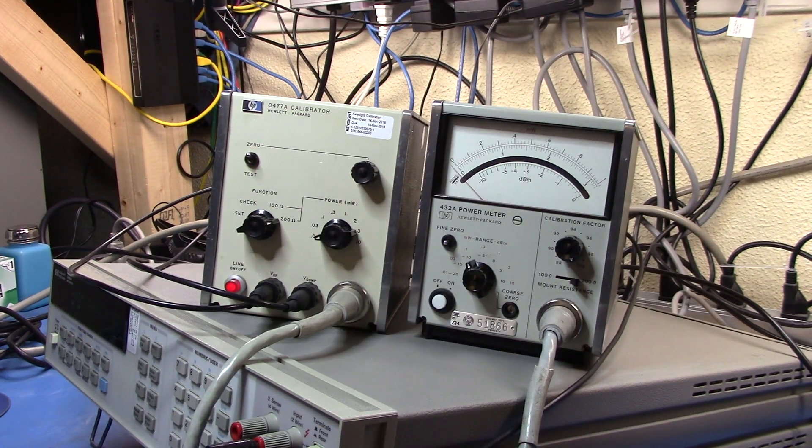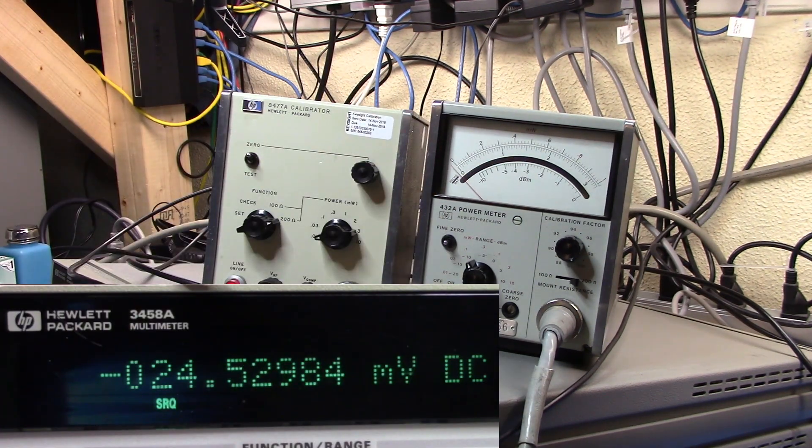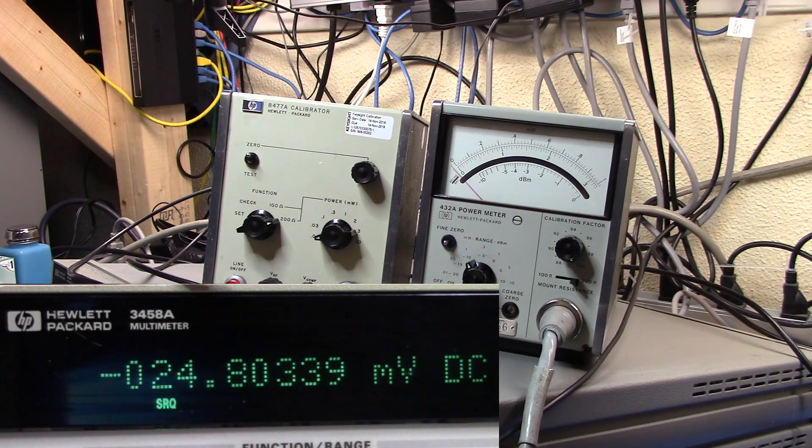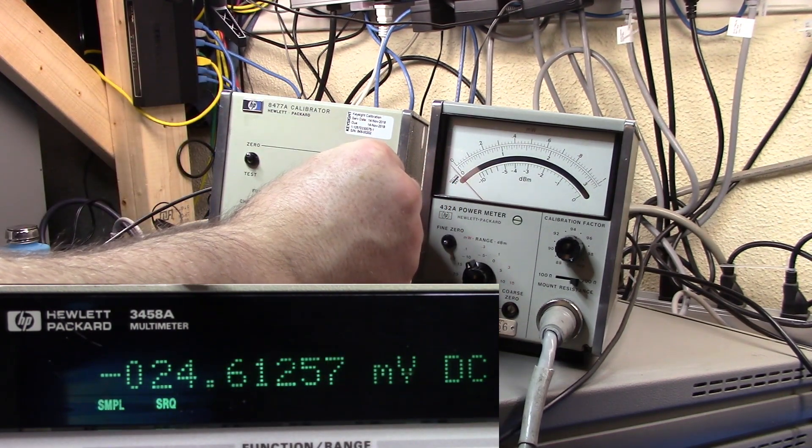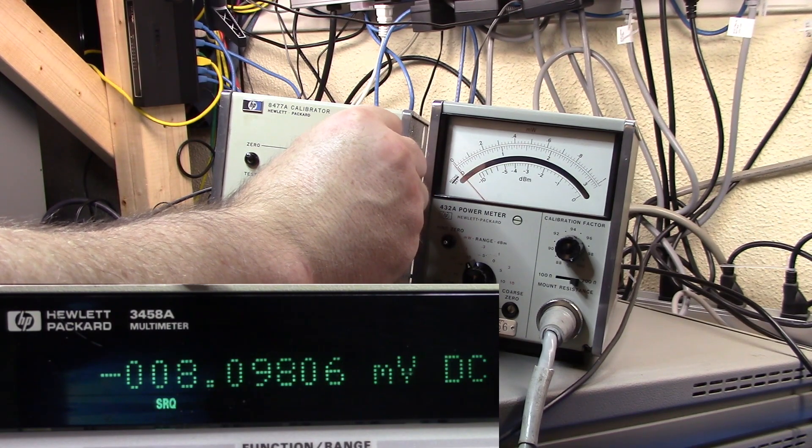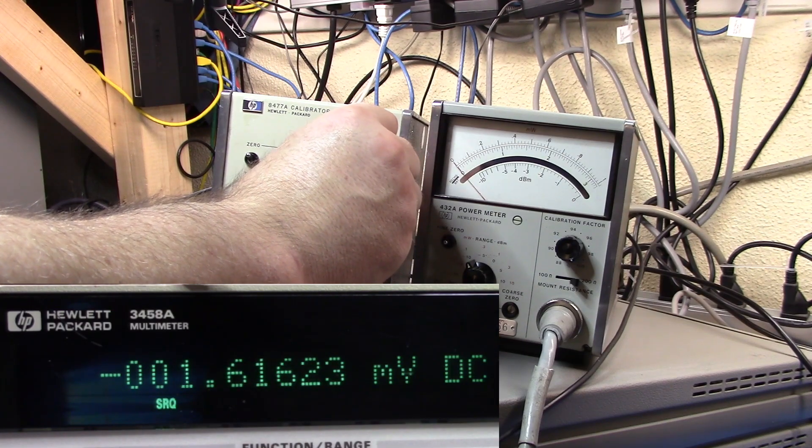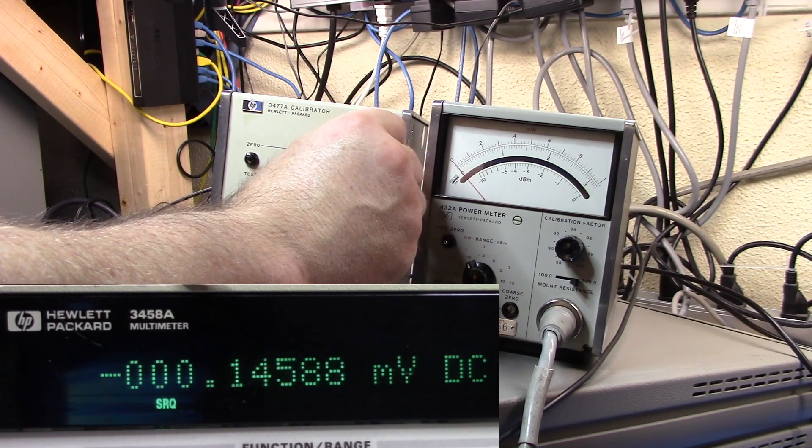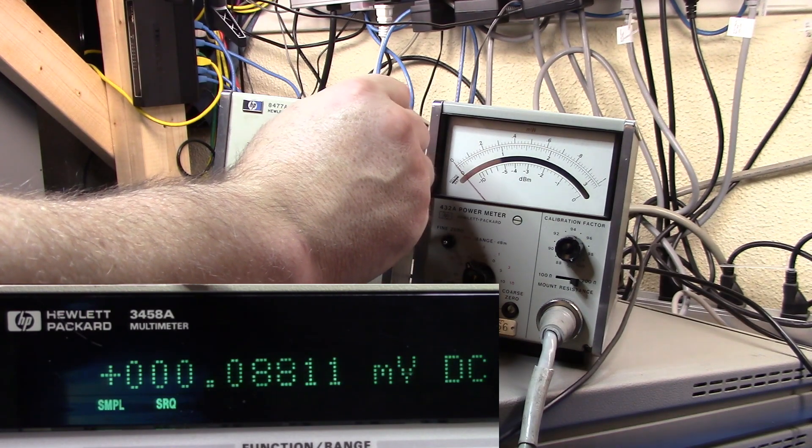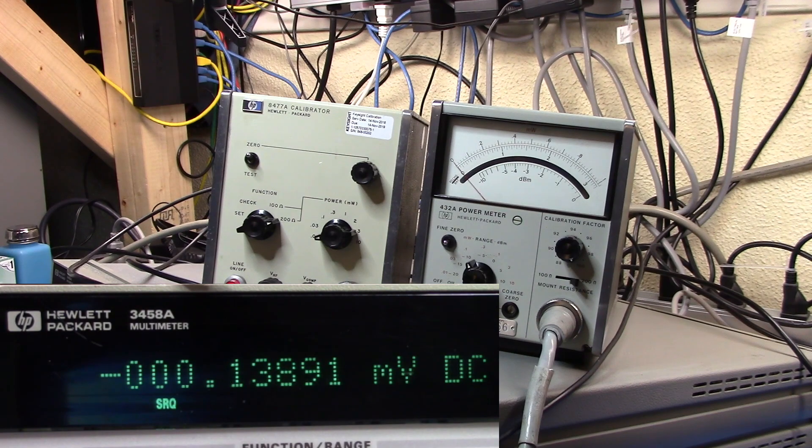Now we need to adjust the zero knob here until we get zero volts plus or minus two millivolts. So let's go and do that. We'll keep going down. Ideally you'd want to be as close to zero as you can get and there we go. We're at zero millivolts plus or minus two.